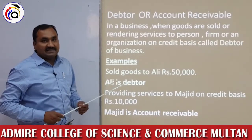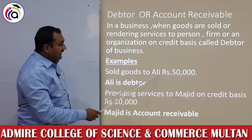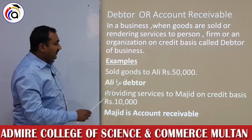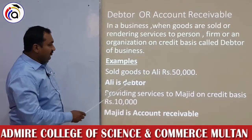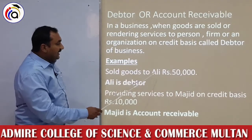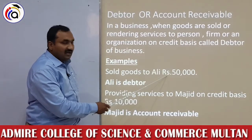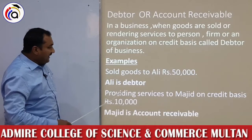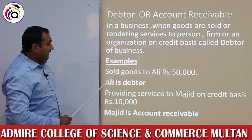Account receivable کا مطلب ہے پیسہ بعد میں وصول کرنا۔ Students، اب اس کی example: sold goods to Ali, rupees 50,000۔ یہ ایک example transaction ہے — کس کو؟ Ali کو، کتنی؟ 50,000۔ یہاں جو word Ali ہے، وہ شخص ہمارا debtor ہے۔ Ali سے ہمیں 50,000 بعد میں وصول کرنا ہے — چاہے 6 days بعد ہو، 7 days، یا after 15 days — یہ آپ کی credit کی terms ہوتی ہیں۔